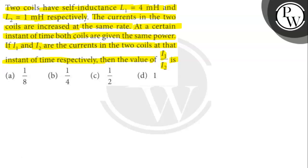Conversely, a changing magnetic field also induces a current. Moreover, a change in the current of the wire or coil causes the induction of a voltage. It appears like some potential difference is applied across the wire so that the current can travel. This induced voltage is called the electromotive force, which is in the opposite direction to the actual applied voltage on the wire. This is in accordance with Lenz's law. So the rate of change of current is given by EMF or V equals L into di by dt.